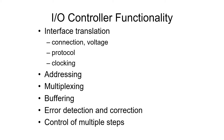Then there's addressing — you have to be able to specify an individual device; the CPU must indicate which device it wants to read or write to. Multiplexing is the connecting of multiple devices to the computer through the I/O controller. You could send a command to the I/O controller, and it will specify the individual device that's supposed to take that action. You can have multiple devices reading and writing simultaneously, and the I/O controller handles the flow of data to two or more devices.